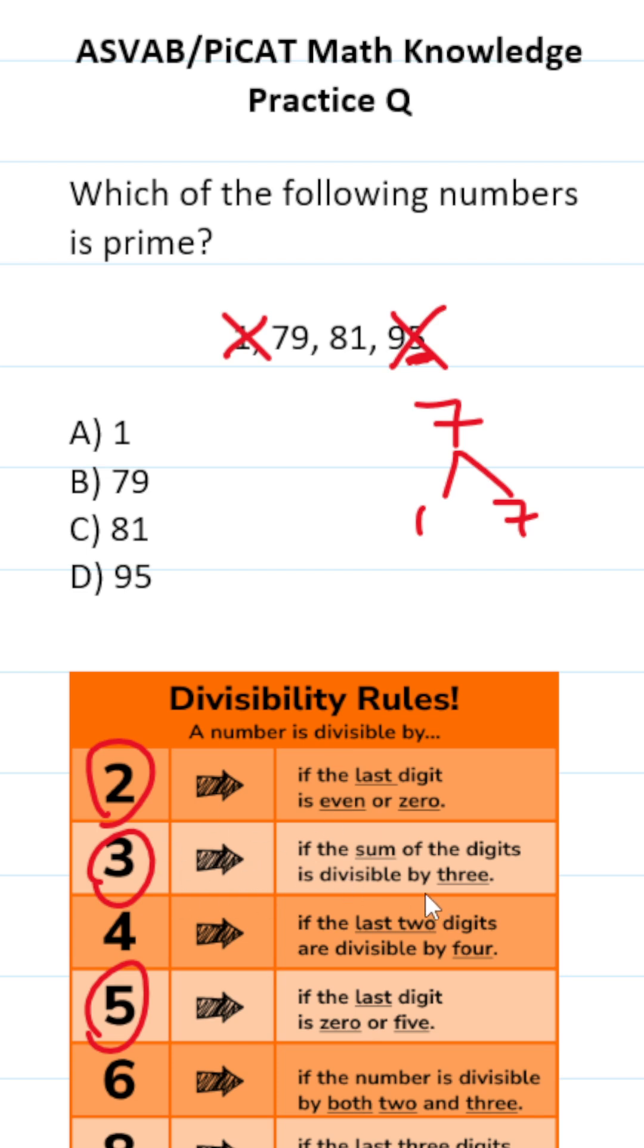The divisibility rule for three says if the sum of the digits in a number is divisible by three, then the number itself is divisible by three and can't be prime. Eight plus one is nine. Nine is divisible by three. Since the sum of eight and one is divisible by three, 81 itself is divisible by three and can't be prime.